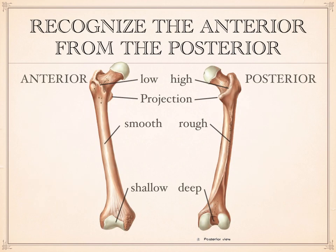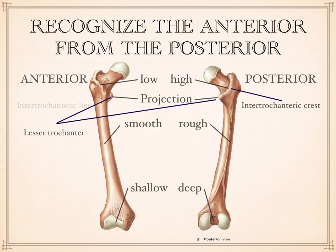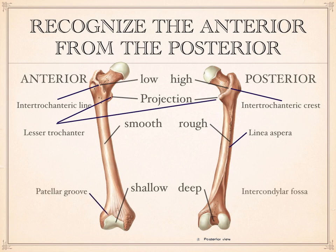So that's the femur. To summarize anterior versus posterior orientation: use the lesser trochanter, which is more prominent on the posterior side; the intertrochanteric crest, which is much more prominent than the intertrochanteric line; the roughened edge of the linea aspera, showing the posterior side; and at the distal end, the difference between the patellar groove and the intercondylar fossa. On the whole, the posterior side of the bone is much more feature-rich, while the anterior side is a much smoother surface.